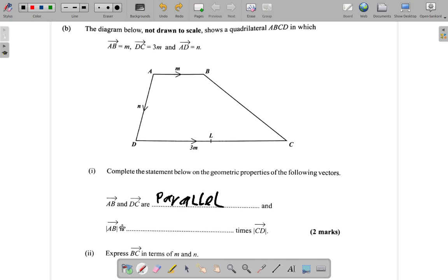They are parallel, and AB with the two lines on each side, that means the length, the magnitude, is how many times CD? AB is how many times CD?